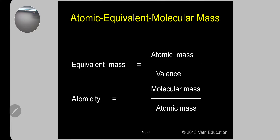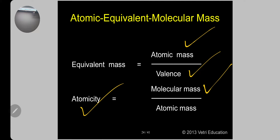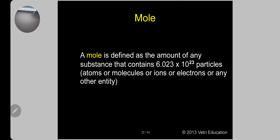Summary of relationships: equivalent mass = atomic mass ÷ valency (mainly for metals). Atomicity = molecular mass ÷ atomic mass, giving the number of atoms — applicable only for molecular elements.